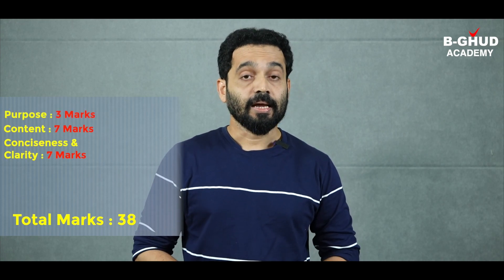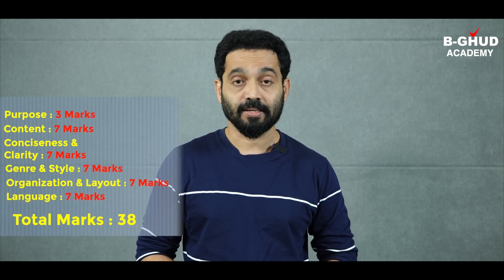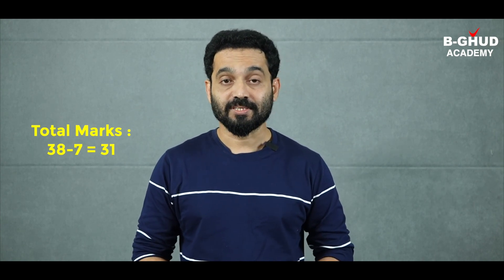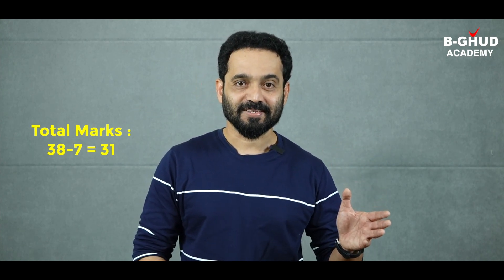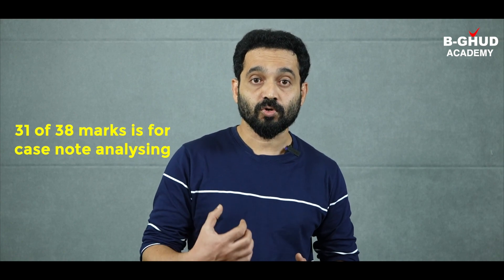The total marks for OET writing is 38. Language — the sixth criterion — carries only seven marks out of 38. That means 31 marks out of 38 go for case note analyzing. The criteria for content, purpose, and conciseness and clarity don't talk about language; they talk about relevant points, excluding irrelevant points, and whether you are presenting and highlighting key information. To crack maximum marks, you just need to improve your case note analyzing.